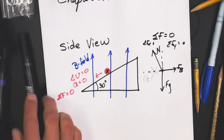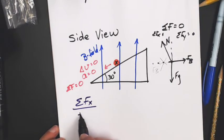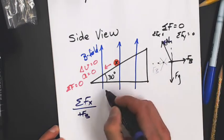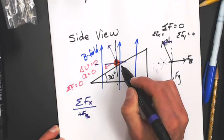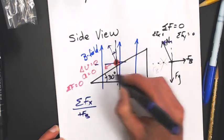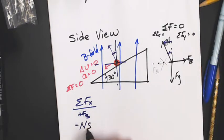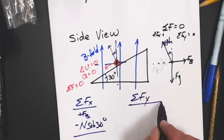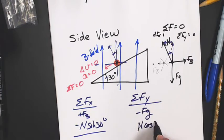All right. So sum of the forces in the x direction. I have positive FB, and then I have this part of there. So this is 30. That's 30. That's 37. This is 30 as well. So I have minus N cosine 30, and those have to equal zero. Sum of the forces in the y direction equal negative FG, and then N cosine 30.